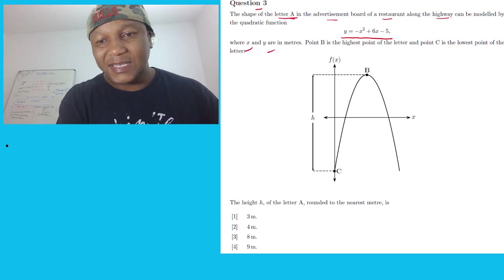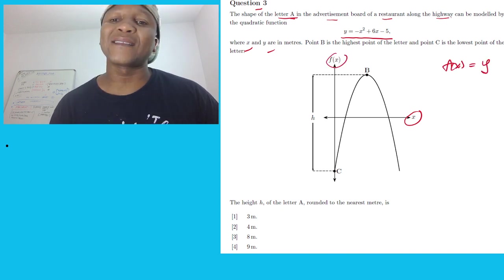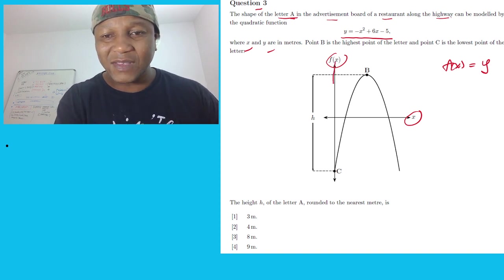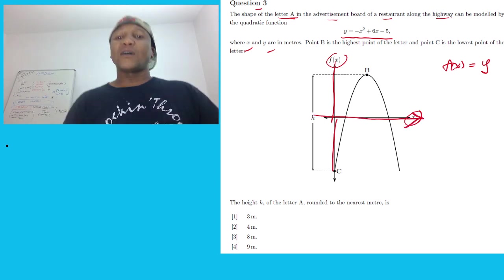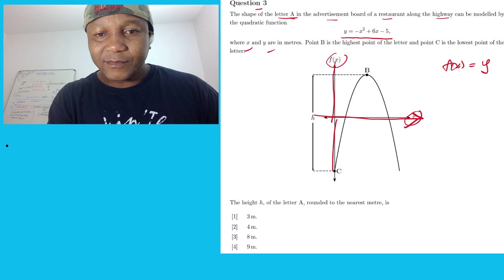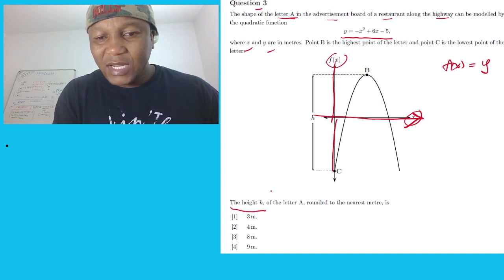These are the x-axis and y-axis. When you see f(x) it is the same as the y-axis. So this is the y-axis and this is the x-axis. Now, what do they want? They want the height h.